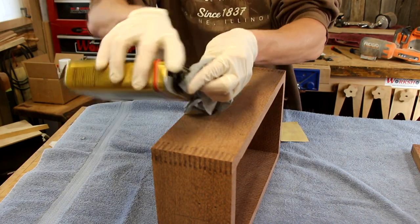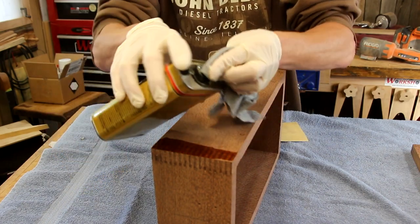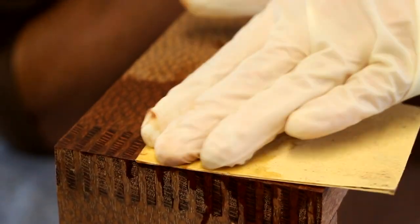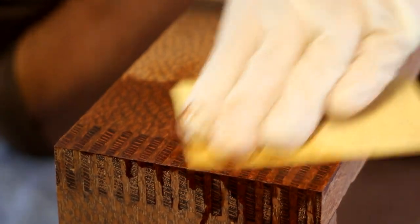I'll start off by applying a heavy amount of wipe-on poly around the finger joints. This is the area I'm going to concentrate on. Now I'm going to grab my sandpaper and I'm going to sand that poly right into those cracks and pores that I need to fill.